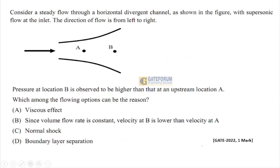Question 4: Consider a steady flow horizontal divergent channel with supersonic flow at the inlet, flow direction from left to right. The pressure at location B is observed to be higher than at upstream location A. Which of the following can be the reason: (a) viscous effect, (b) constant volume flow rate making velocity at B lower, (c) normal shock, (d) boundary layer?